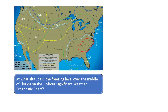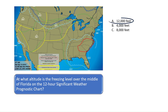At what altitude is the freezing level over the middle of Florida on the 12-hour significant weather prognostic chart? Since the legend tells us the freezing level is indicated by the green dashed line, we can see the number 120 next to the green dashed line over Florida. This indicates the freezing level over Florida is 12,000 feet, since we add two zeros to the number. The correct answer is A.